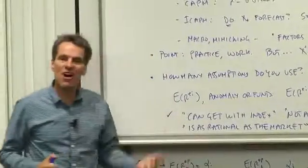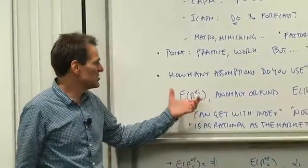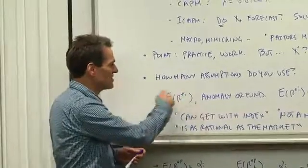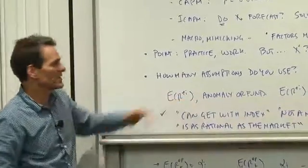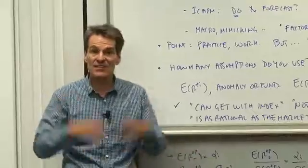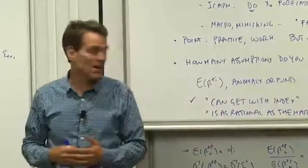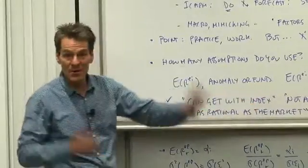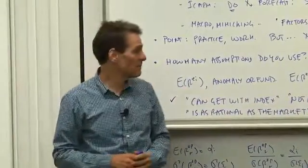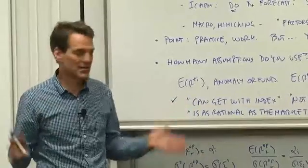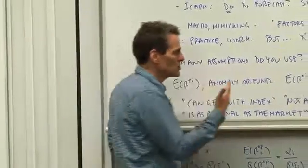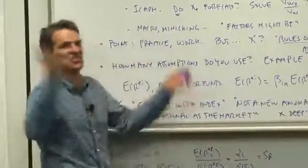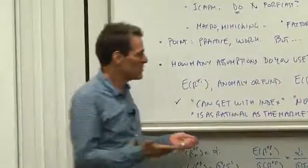The most common thing you do with an asset pricing model is you evaluate an anomaly. So suppose you have some strategy that seems to offer an expected return, maybe an anomaly, somebody told you some new great way to pick stocks, or maybe you're evaluating a fund. Maybe someone is trying to sell you, come invest with me and look at the great average returns you get. What do you do with that? You check whether that expected return is justified by, let's just try the CAPM.